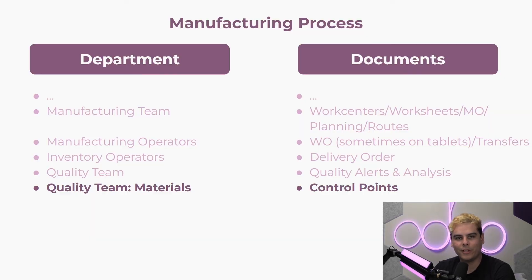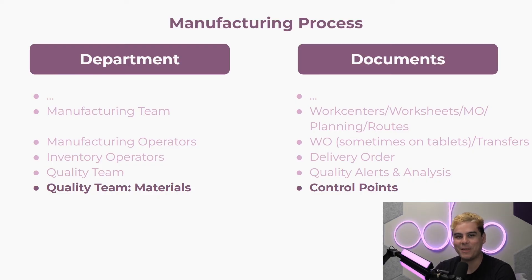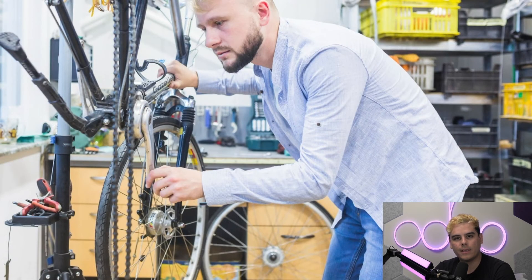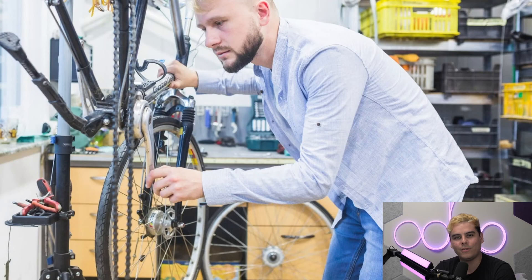Quality checks can also be performed in pre-delivery. If there happens to be a problem in the product design itself, an engineering change order — or ECO — will be issued, which triggers an updated BOM to correct the issue through Odoo's PLM app. Version controls allow teams to modularly implement new changes or gracefully roll back old ones, so assembly teams always know which BOM version should be used for manufacturing at any given point.